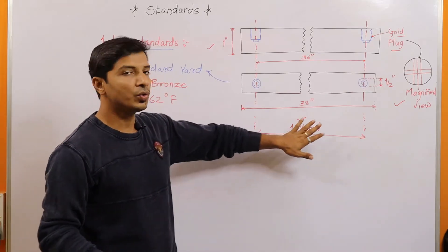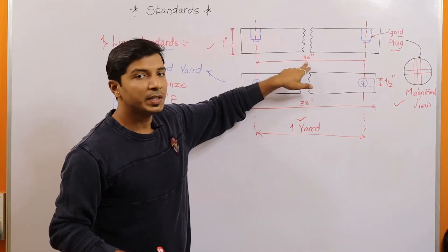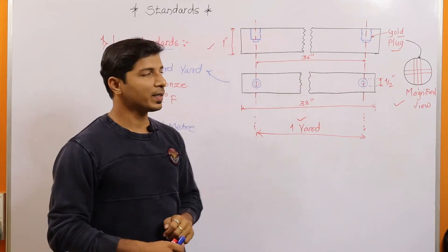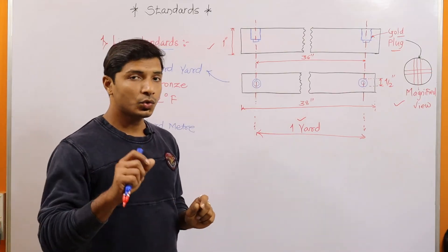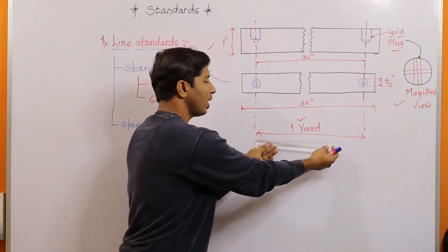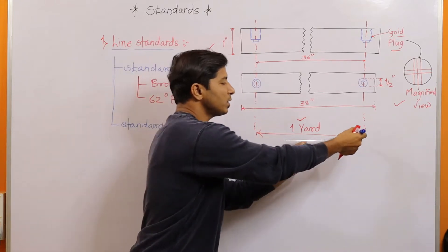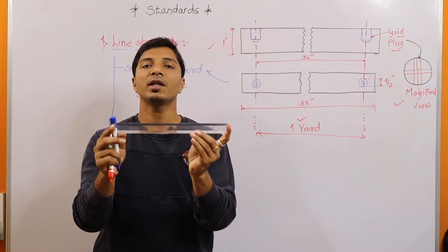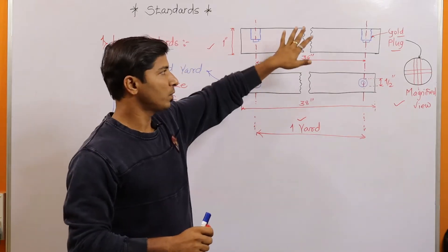Yard is a unit used to measure linear dimensions such as length. One yard is equal to 36 inches, or three feet. This bronze bar — the standard yard — is preserved somewhere in the world. When you have to manufacture instruments, you take a blank material, place it with reference to these lines, and engrave lines on the material accordingly. This distance reflects one yard, and you can divide it into divisions to manufacture instruments.